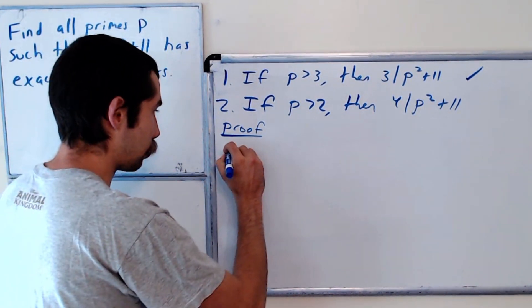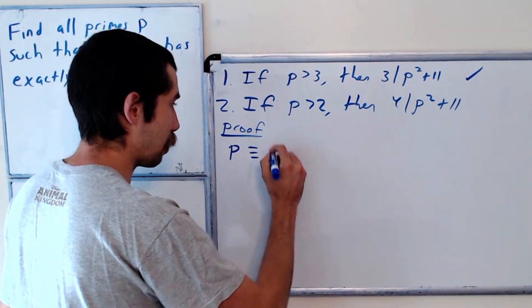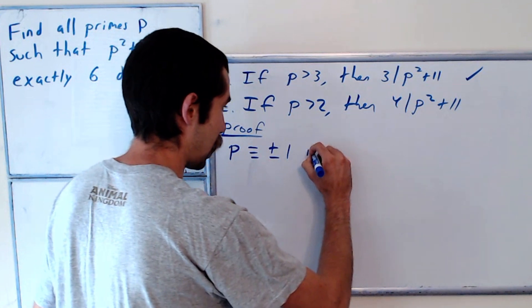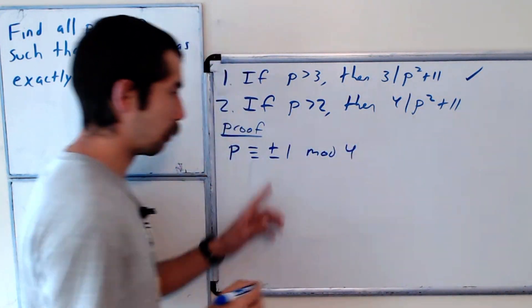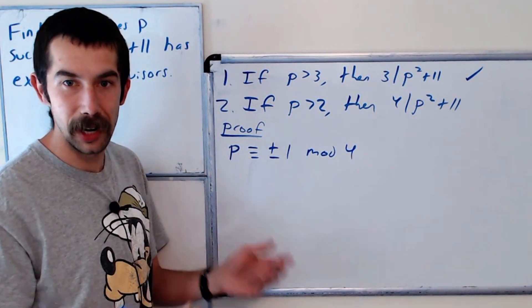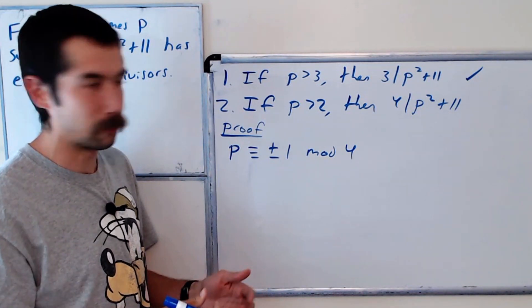Okay, so p, again, is going to be plus or minus 1, this time mod 4, right? Any number, when you divide it by 4, has a remainder of 1 or negative 1.